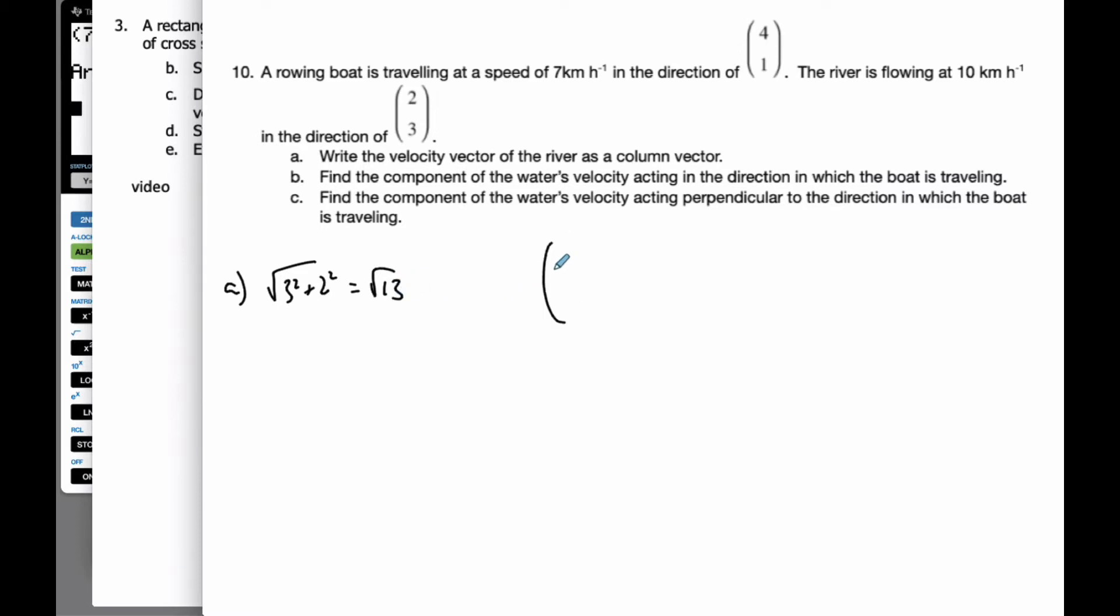So if I take my vector (2, 3) and I divide it by the square root of 13, this is now a unit vector. It has a length of 1 in the direction of (2, 3). But I want it to have a length of 10, so I multiply it by 10. And this is what we'll call our vector, the river vector.